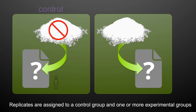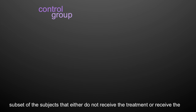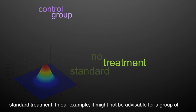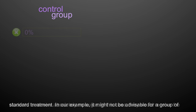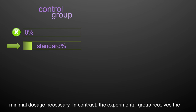Replicates are assigned to a control group and one or more experimental groups, and the effect of the treatment is assessed. The control group is a random subset of the subjects to be examined that either do not receive the treatment or receive the standard treatment. In our example, it might not be advisable for a group of students to receive absolutely no sugar, so they would receive the minimal dosage necessary.